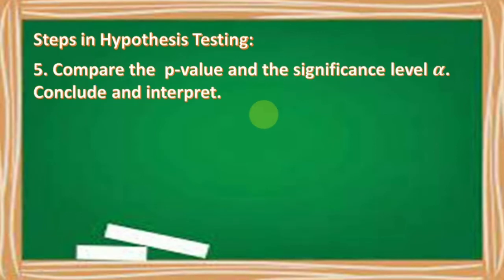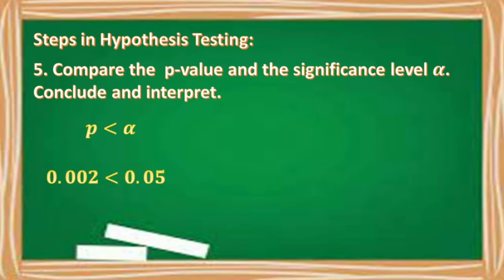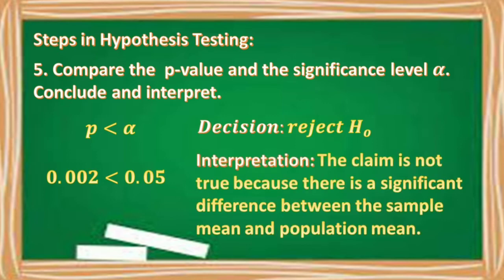Number five, compare the p-value and the significance level or alpha, then conclude and interpret. P is less than alpha because 0.002 is less than 0.05, so our decision is to reject the null hypothesis. The interpretation is the claim is not true because there is a significant difference between the sample mean and the population mean.